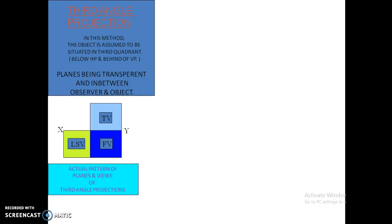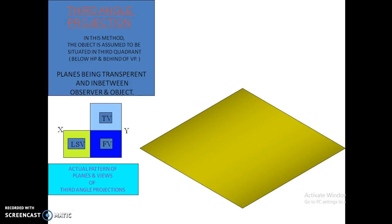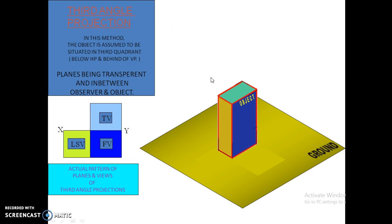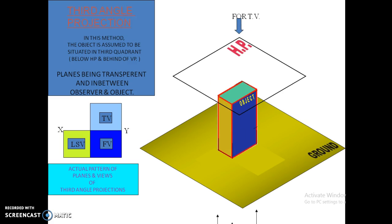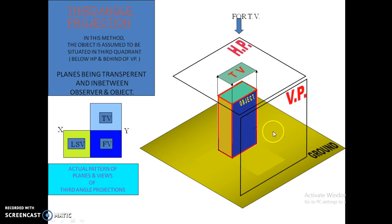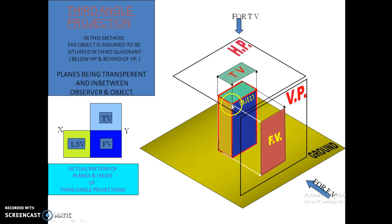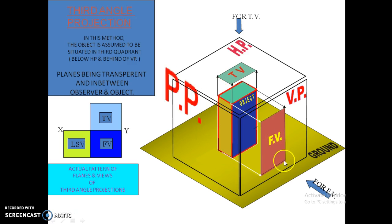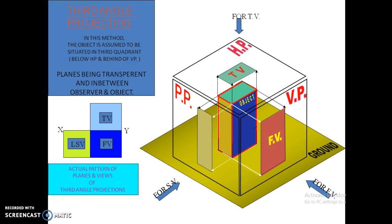In the third angle projection method, we consider the planes as transparent and place the planes in between the observer and the object. We project the points to the HP, VP, and PP to get the front, top, and side views.